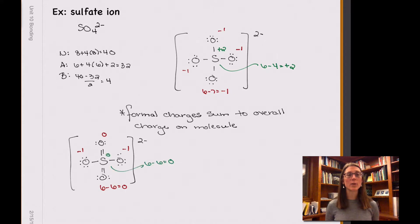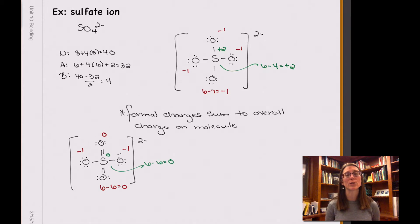So we see that we have two different ways to draw the sulfate Lewis structure, and they have very different formal charges. In both cases, the formal charges add to the overall charge of the ion. But there are two different possibilities, so what we're going to look at next is how do you decide which the better formal charge possibility is for your Lewis structure.